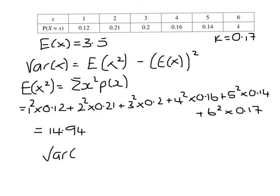It leaves us with a variance of x, 14.94 minus 3.5 squared, which is 2.69.